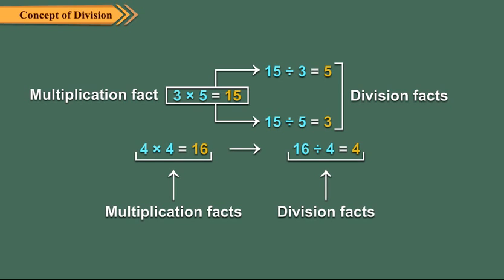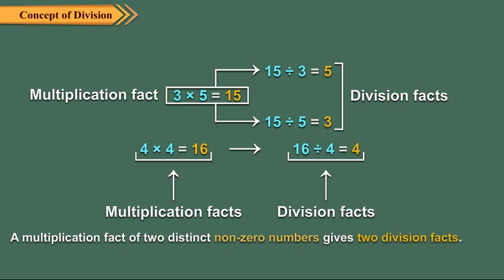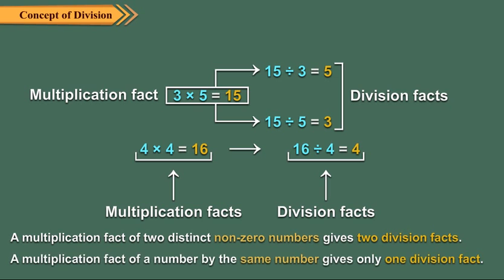Here, it is not possible to get two division facts because both the numbers multiplied are the same. A multiplication fact of two distinct non-zero numbers gives two division facts. A multiplication fact of a number by the same number gives only one division fact.